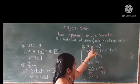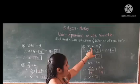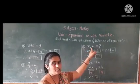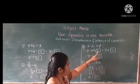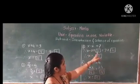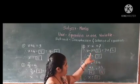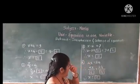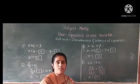Next example: x minus 2 is equal to 7. Here minus 2 is present on the left hand side. We add plus 2 to both sides. x minus 2 plus 2 equals 7 plus 2. The opposite numbers get cancelled out — minus 2 and plus 2 cancel. Only x remains on the left hand side, and 7 plus 2 equals 9. So the value of x is 9.